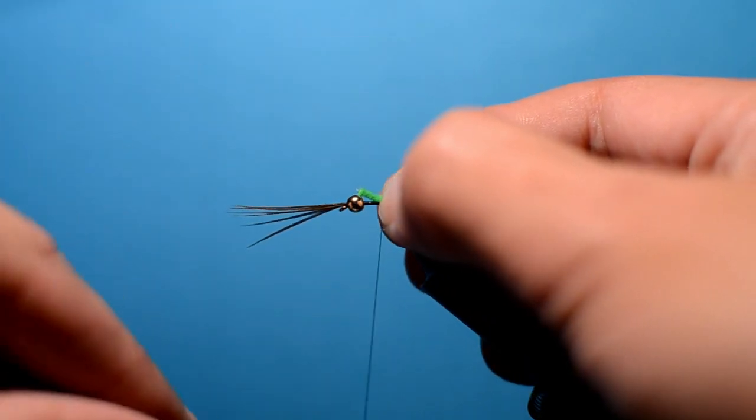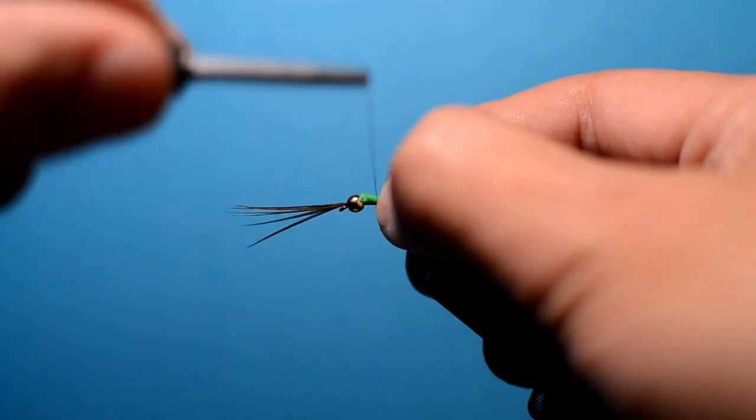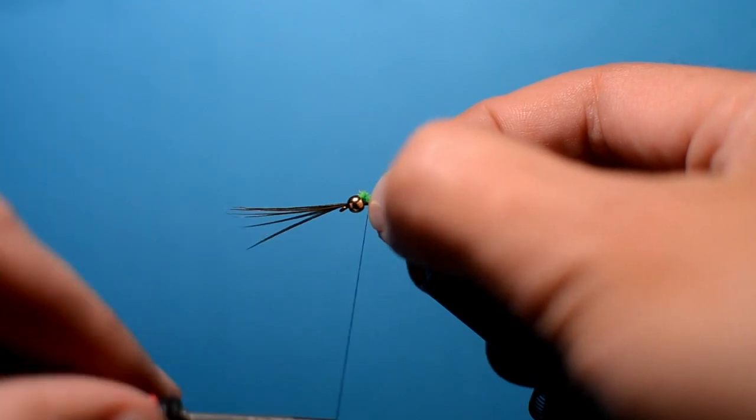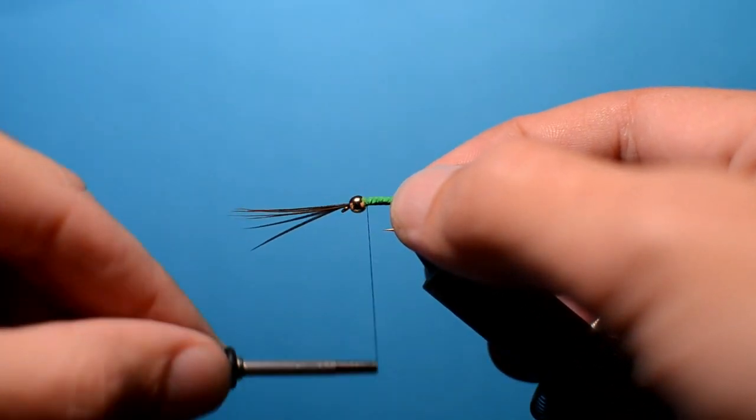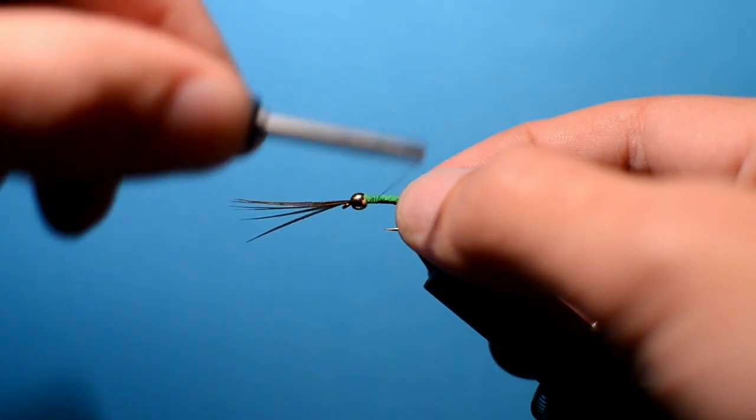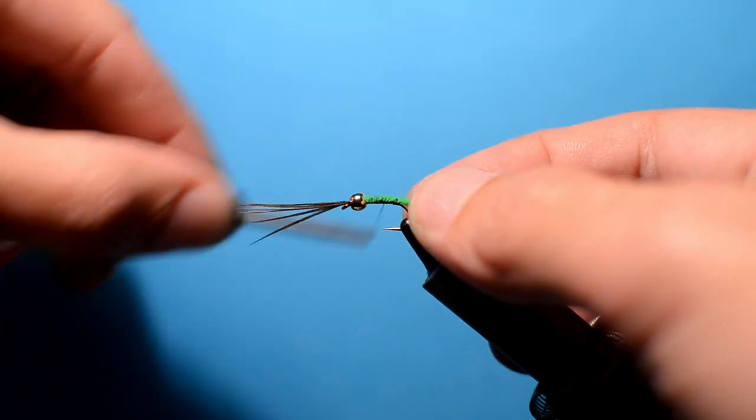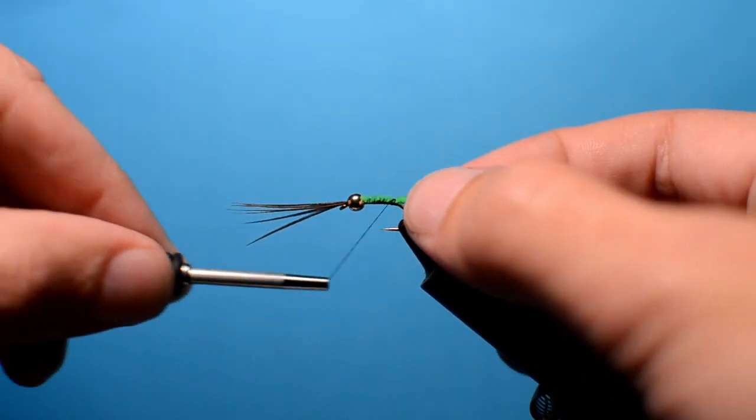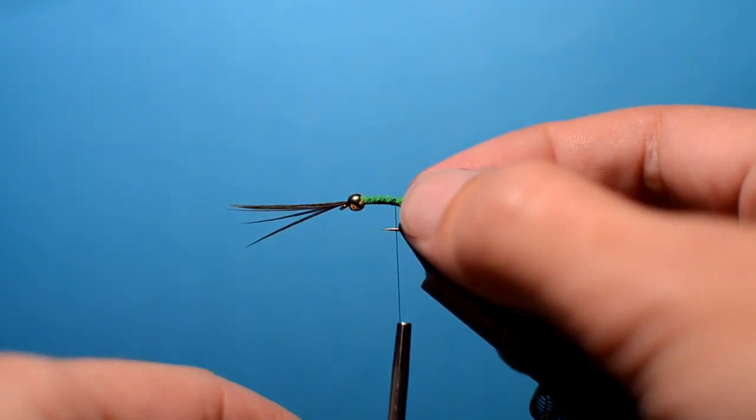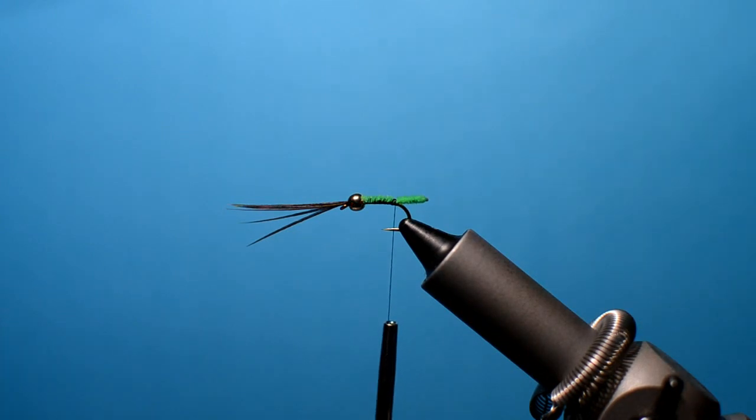Then what we'll do is just take the thread up over the top of the chenille so it tucks in behind the bead, forming a base for the body. And take the thread back down to about where we started. Somewhere there.